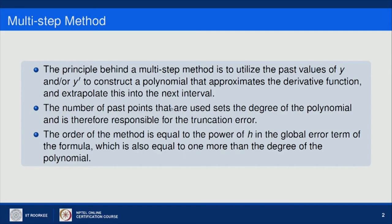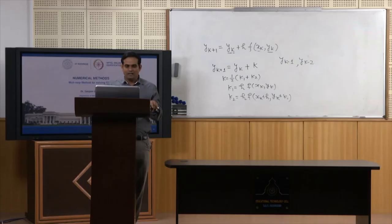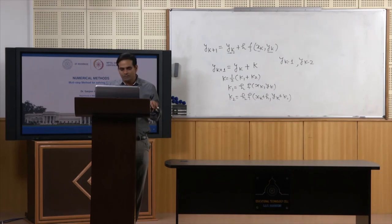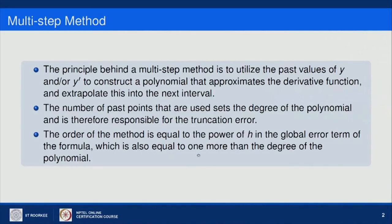The number of past points used sets the degree of the polynomial being fitted, and is therefore responsible for the truncation error. The order of the method equals the power of h in the global error term, which is also equal to one more than the degree of the polynomial. So if we have a degree-4 polynomial, we will have an error of order h^5.